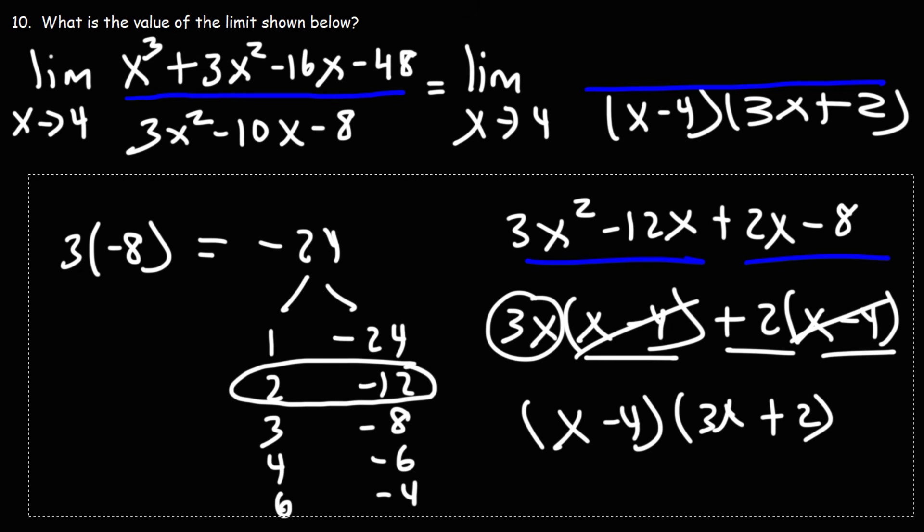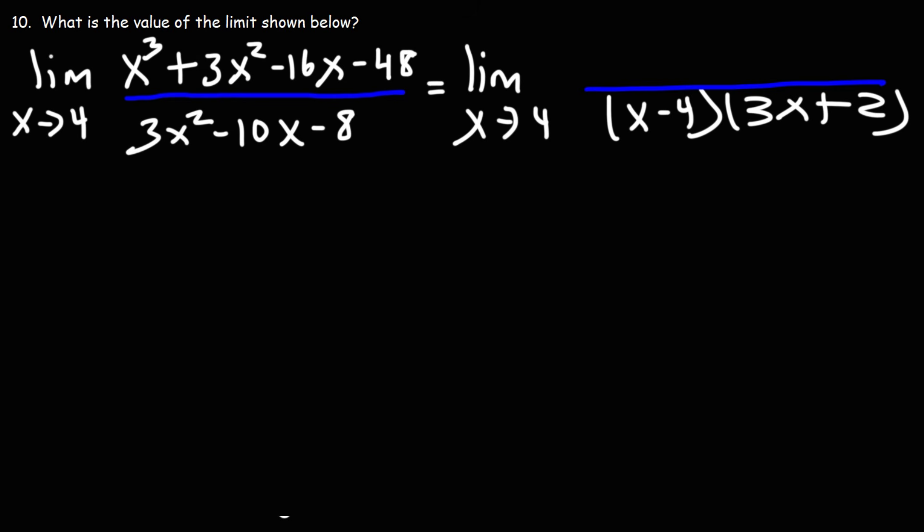Now in the numerator, we don't have a trinomial, but we have a polynomial with four terms. Notice that the ratio of the first two coefficients is the same as the ratio of the last two coefficients. Negative 48 divided by negative 16 is positive 3. 3 divided by 1 is also 3. So because the first two terms have the same ratio of coefficients as the last two terms, we could factor by grouping.